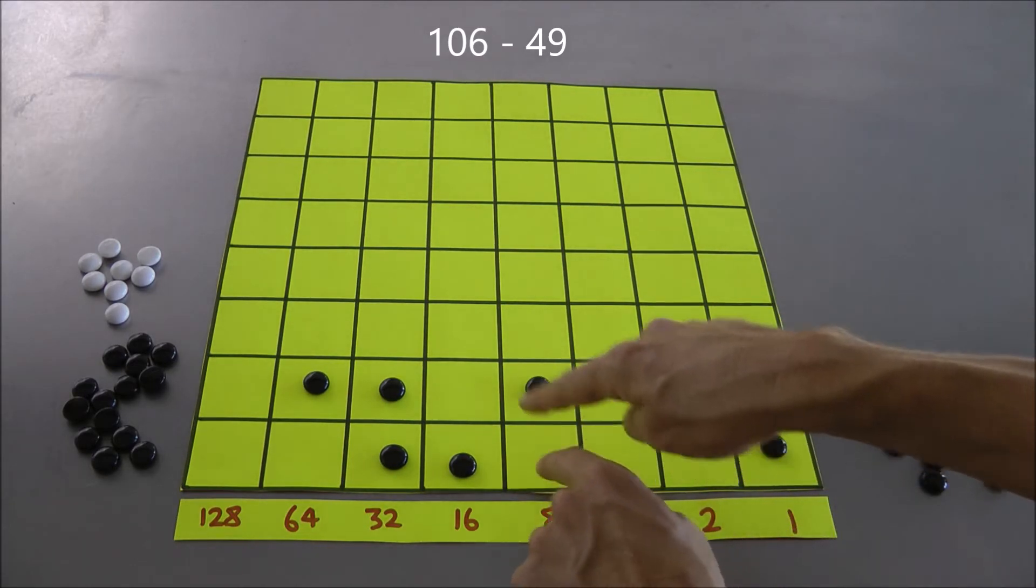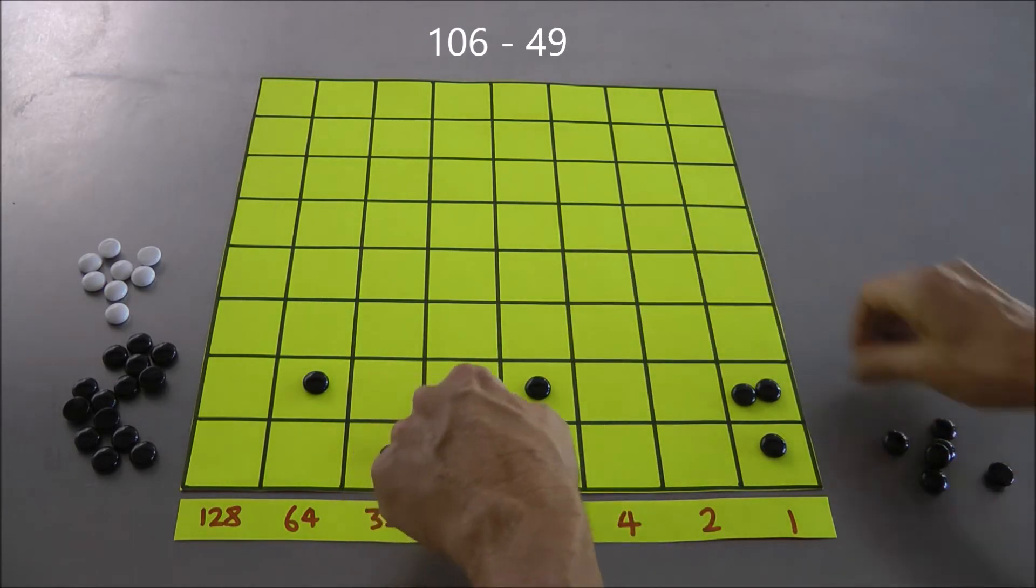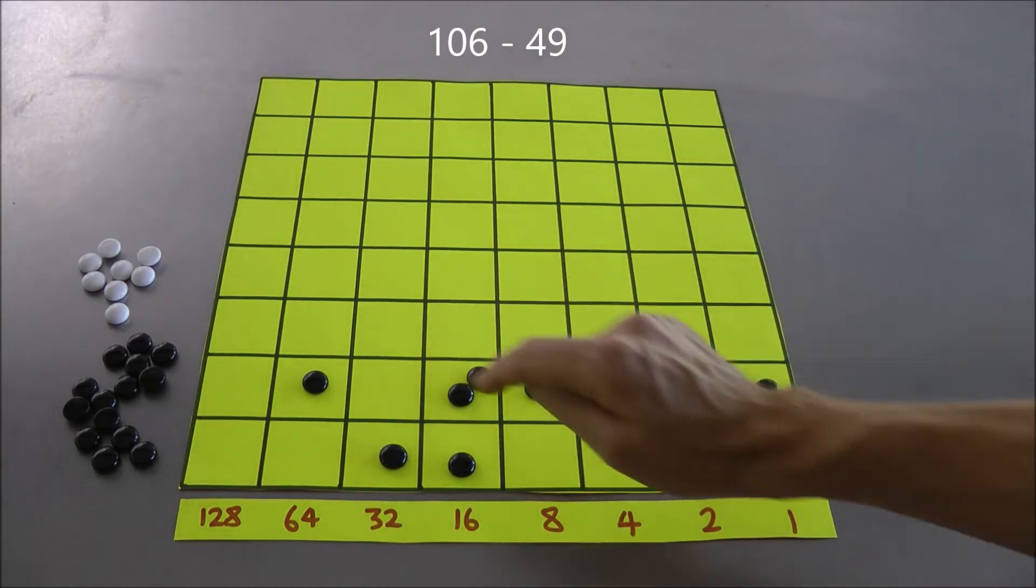I don't need to do any subtractions there, but I need to subtract one dot from there, which I can't do. So unexplode that dot. Well, now create a problem there. Unexplode that dot.